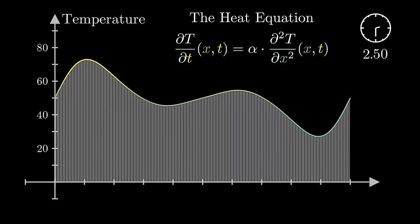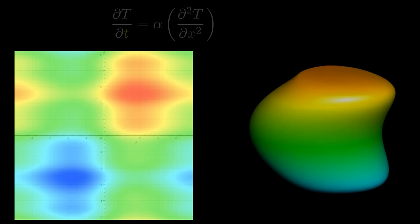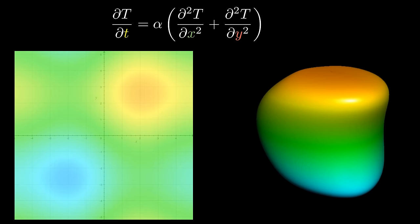You might wonder about objects which are spread out in more than one dimension, like a plate or something three-dimensional. In that case the equation looks quite similar, but you include the second derivative with respect to the other spatial directions as well.